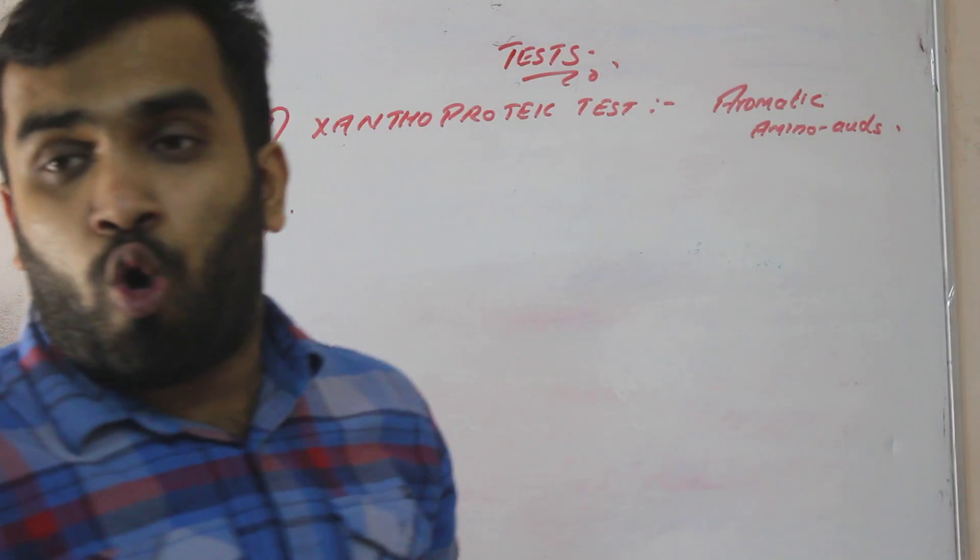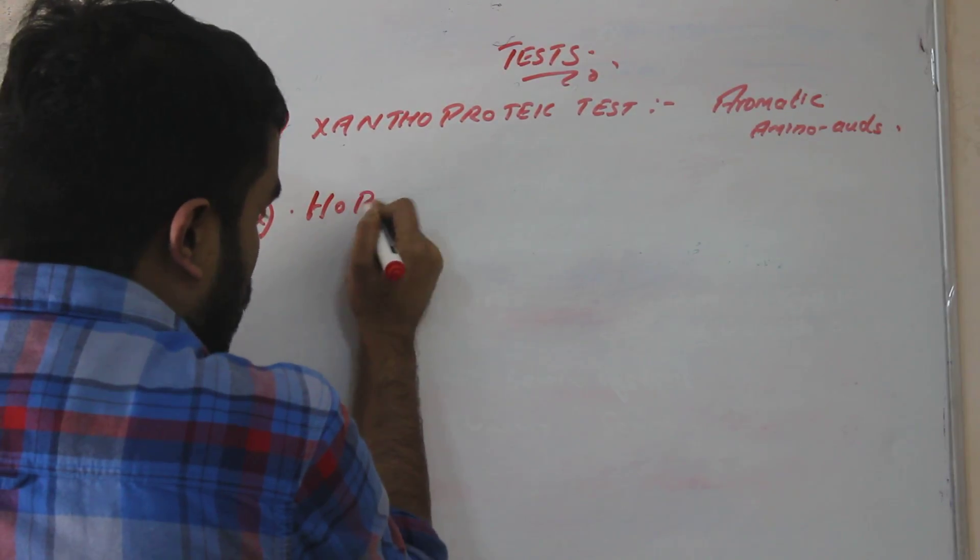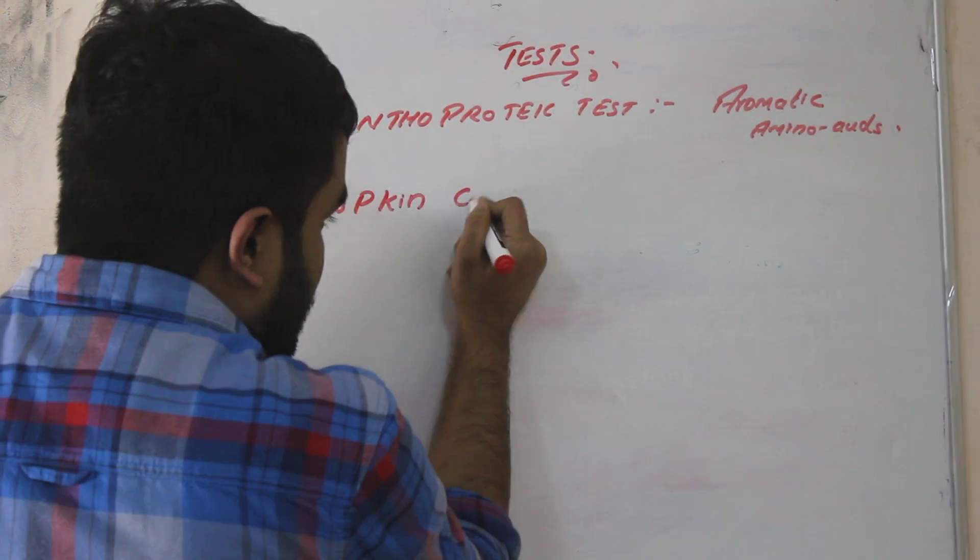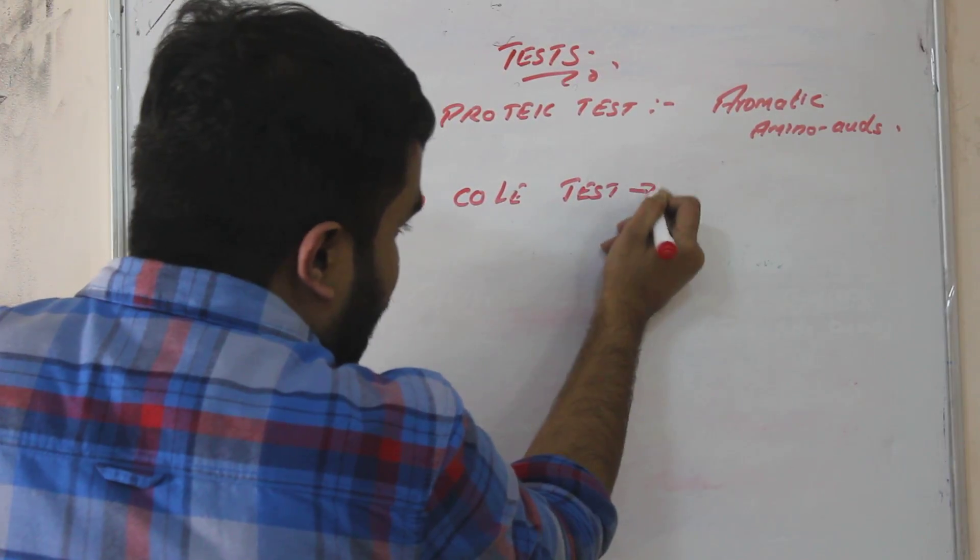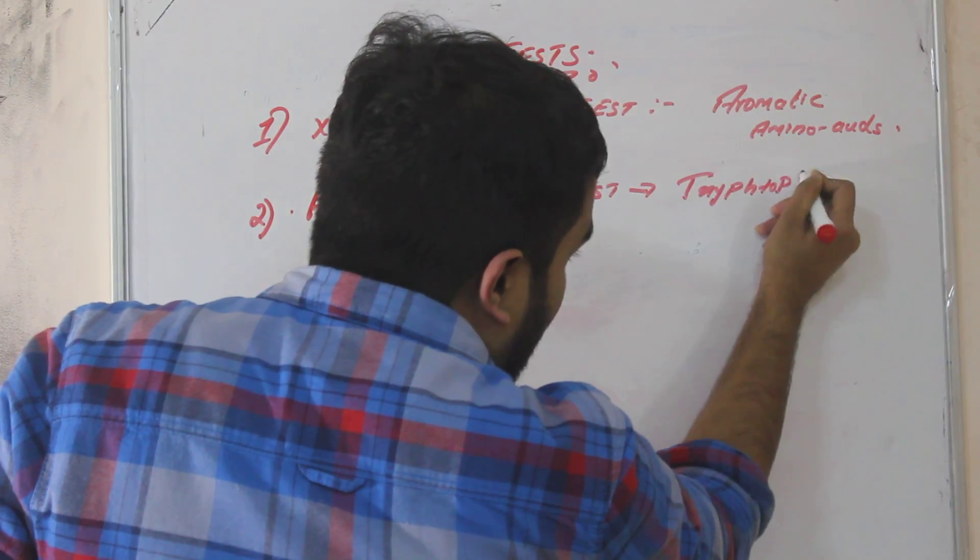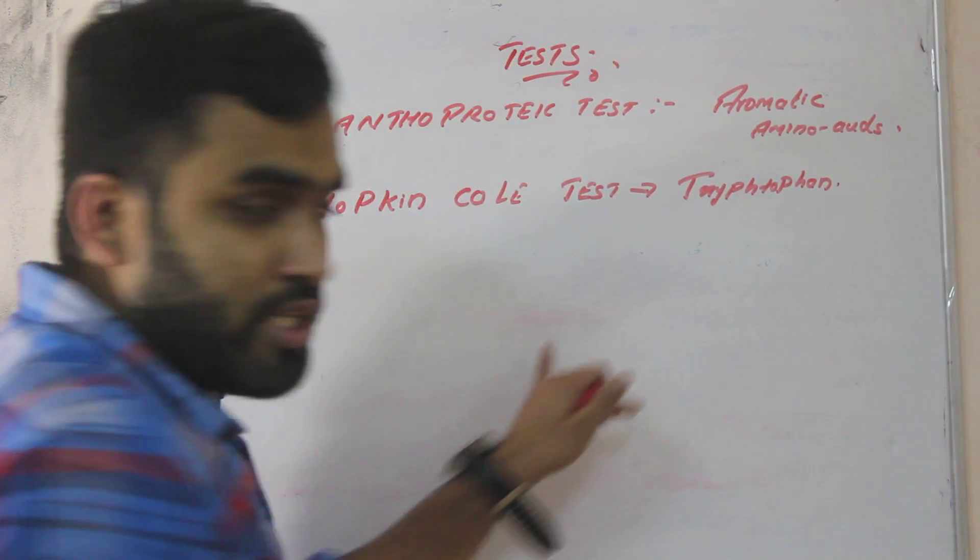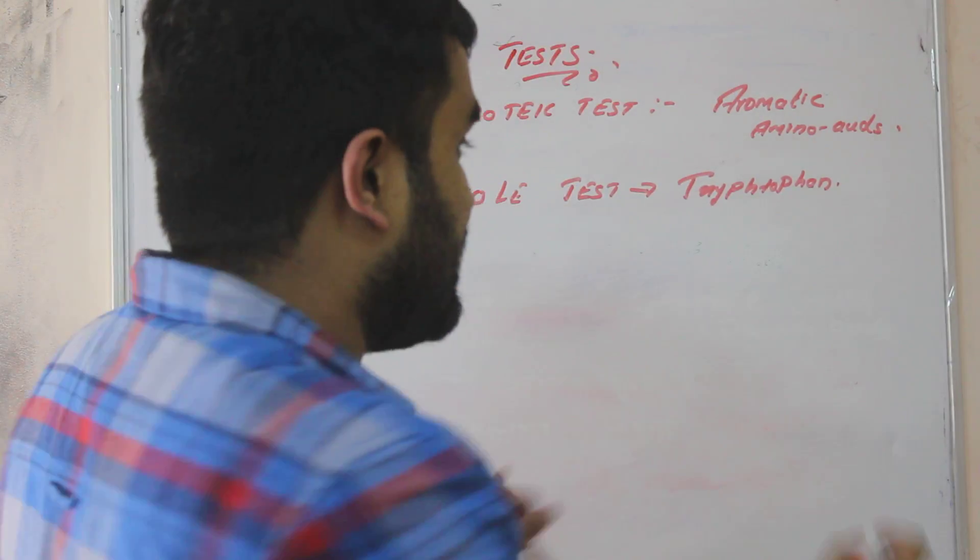The second test is known as Hopkins Cole test. This test is done for tryptophan. I told you earlier, tryptophan is an aromatic amino acid.